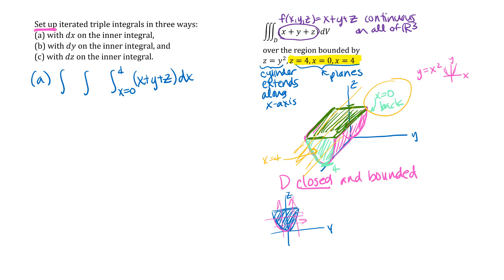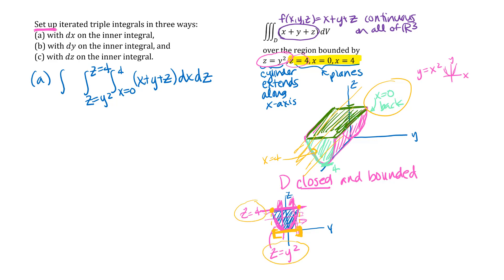I need to decide whether to do y or z next. This region is both y-simple and z-simple so either order works. I'll do z next — going in the direction of increasing z, I enter through the parabola z equals y squared and leave through the line z equals 4. After setting up dz, I collapse into y: the y values go from negative 2 to 2, found by solving where z equals 4 intersects z equals y squared.